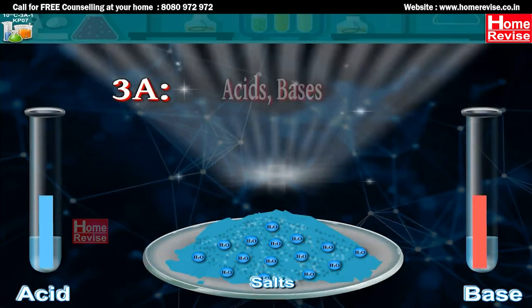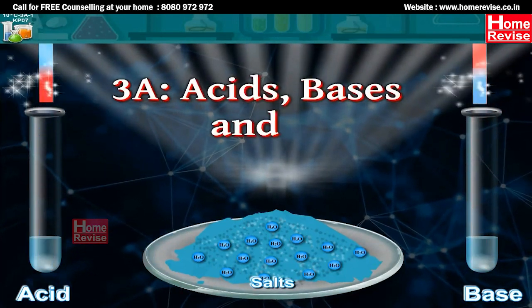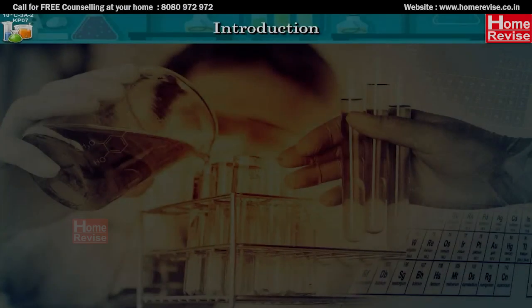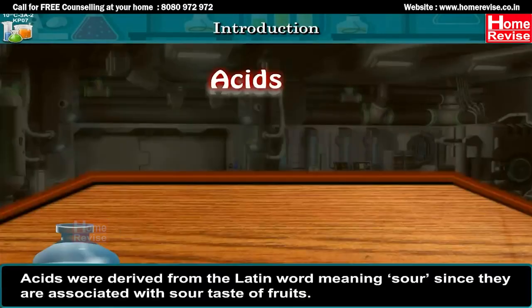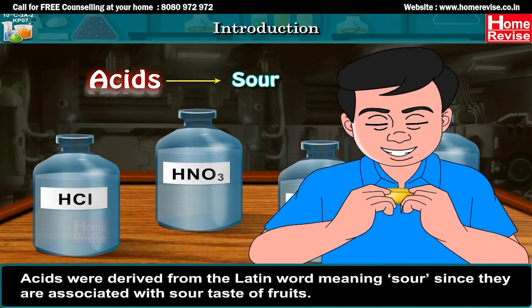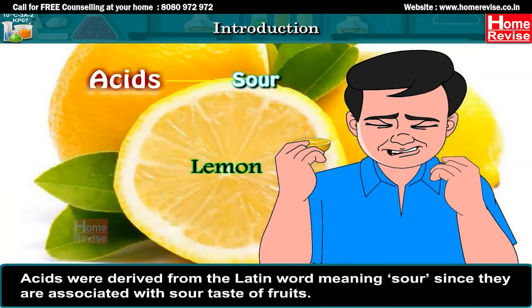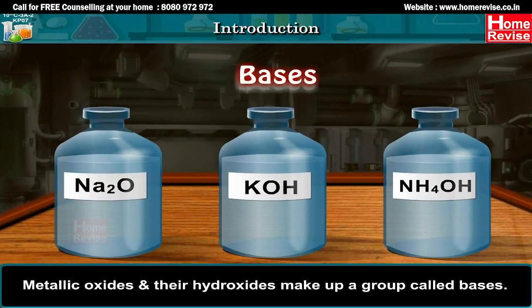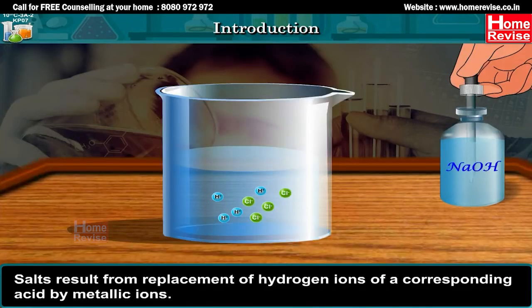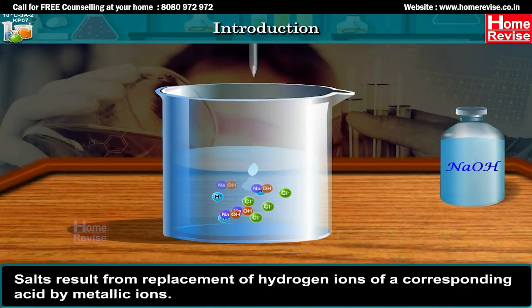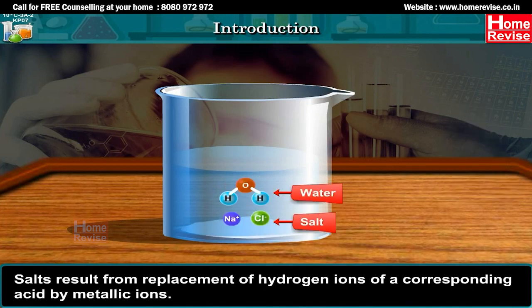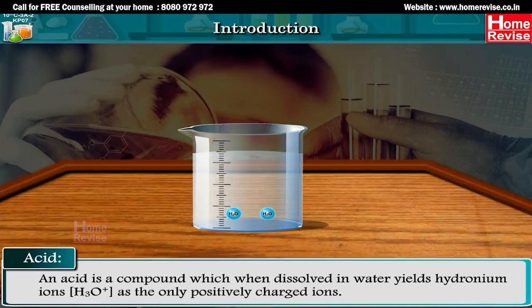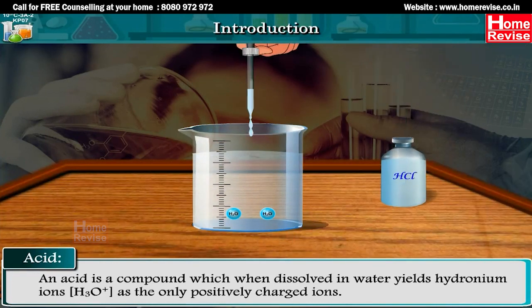Chapter 3: Acids, Bases and Salts. Introduction. Acids were derived from the Latin word meaning sour, since they are associated with the sour taste of fruits. Metallic oxides and hydroxides make up a group called bases. Salts result from replacement of hydrogen ions of a corresponding acid by metallic ions.